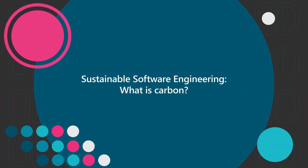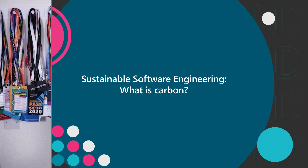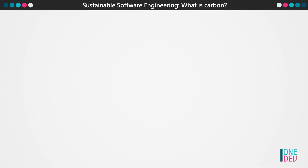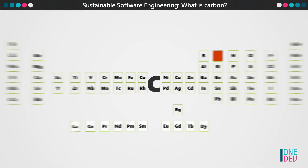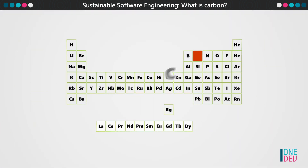Being green means different things to different people, and that's actually a challenge when it comes to figuring out how to communicate and what to optimise for. So for sustainable software engineering, we decided to focus in on carbon, specifically carbon dioxide.